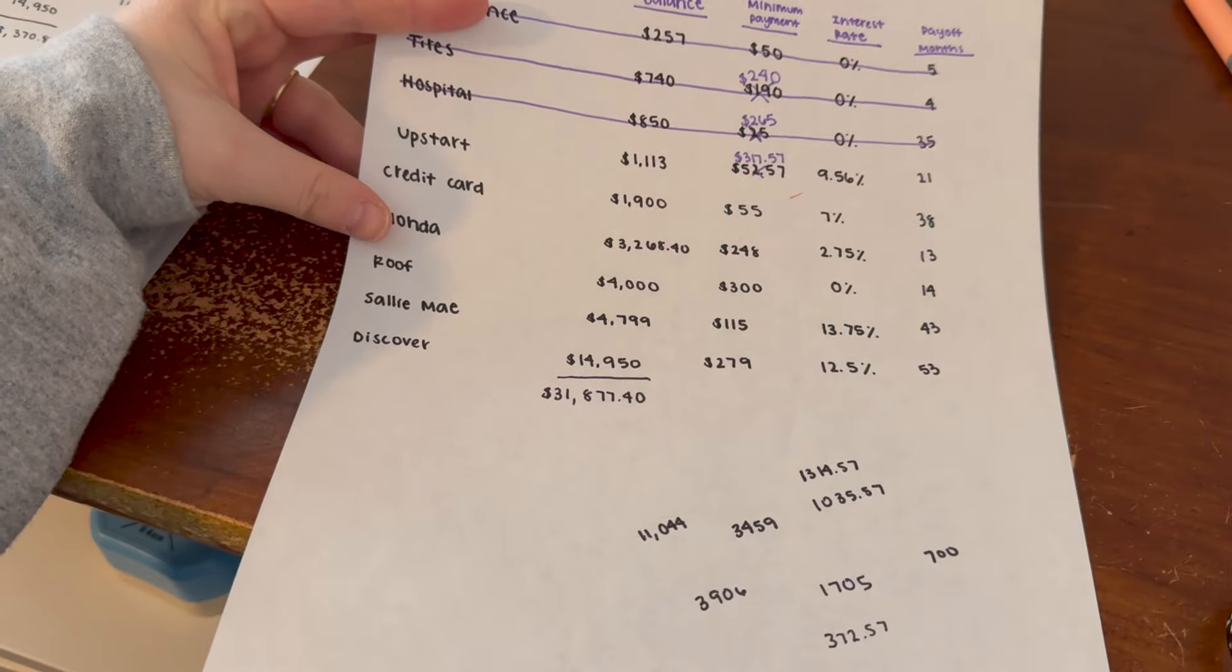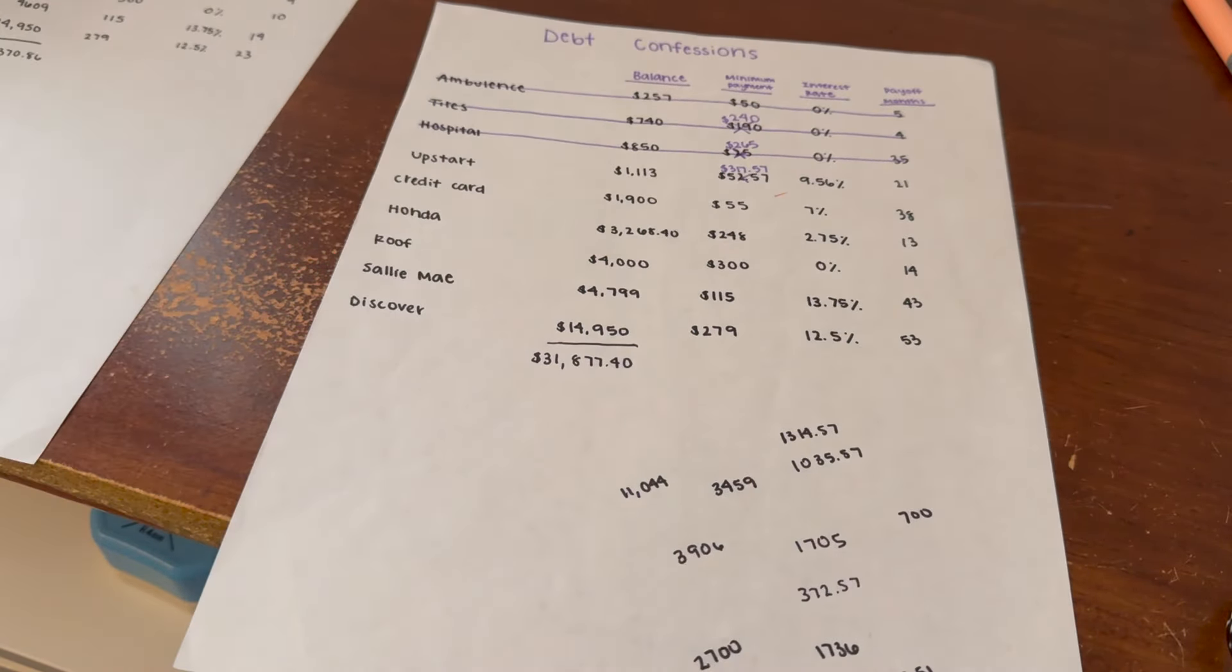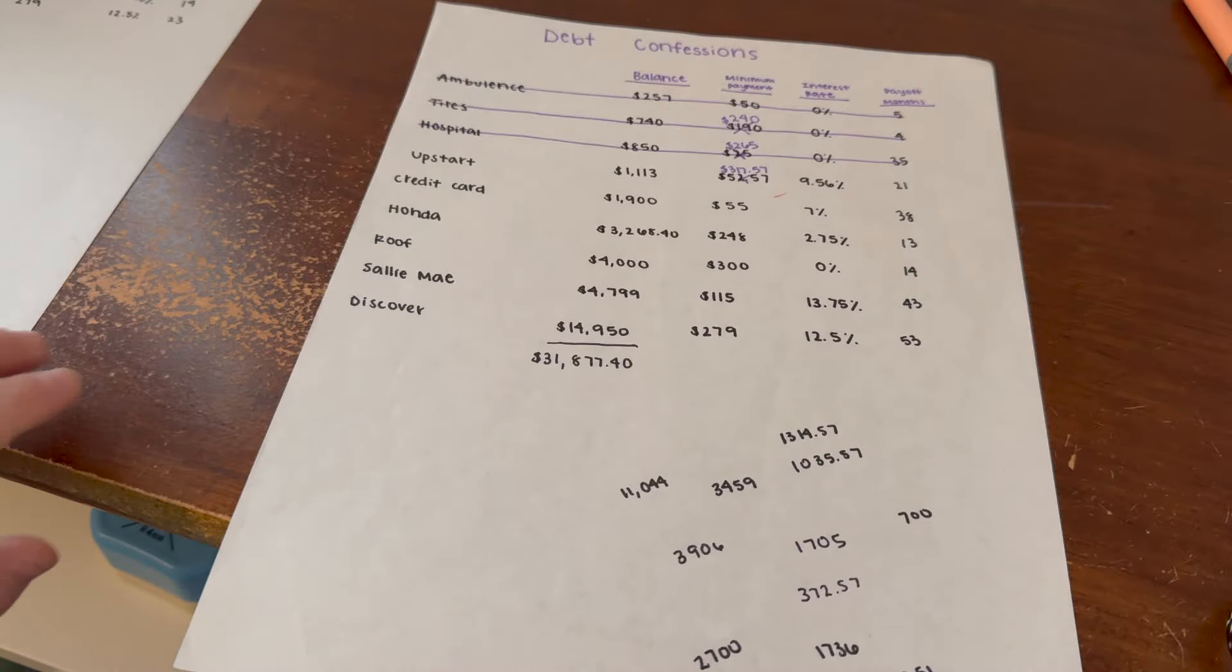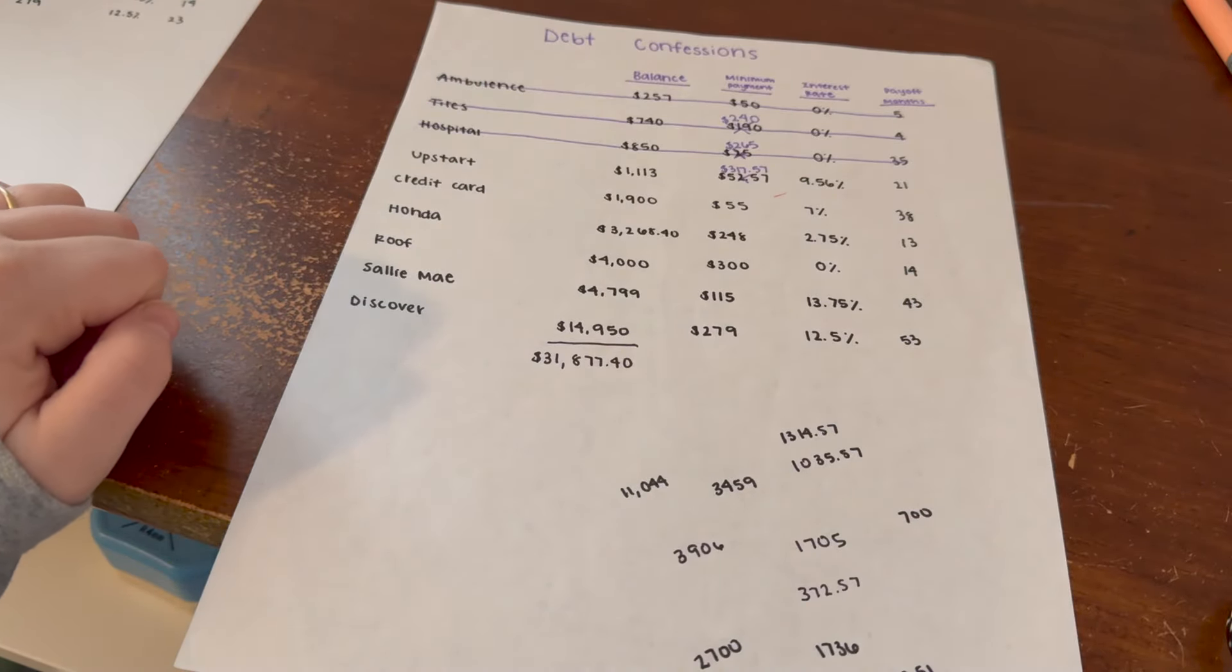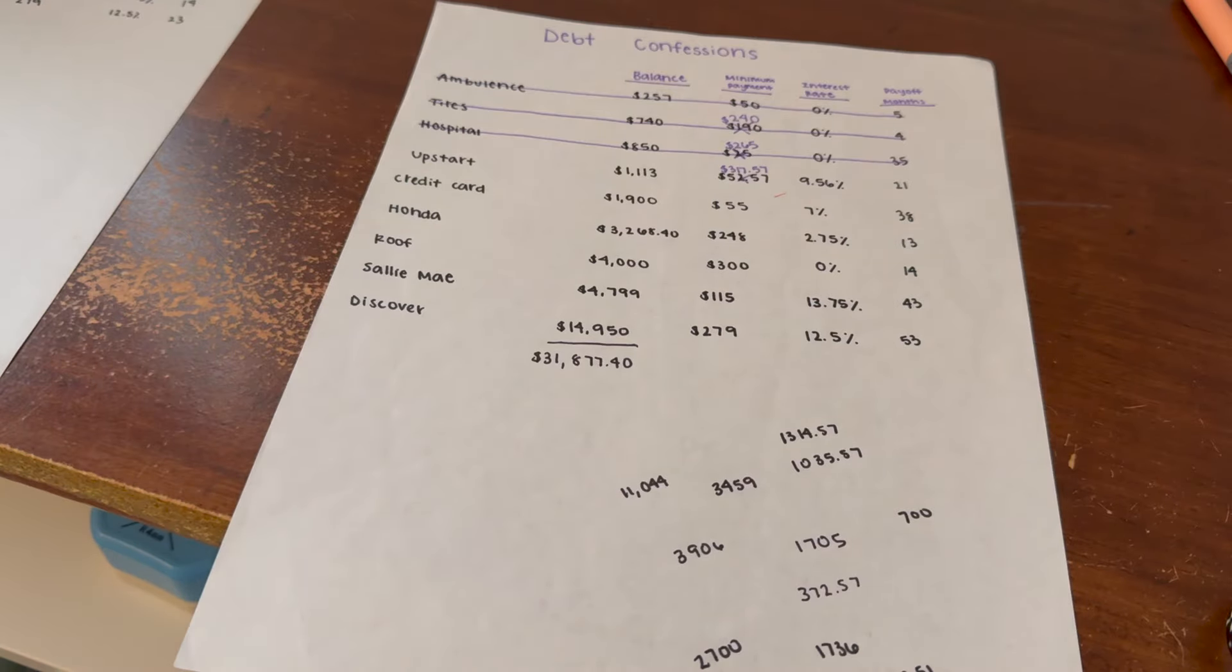I know some people might be confused why I skipped my credit card and went straight to my Honda. That is just for personal reasons, it's probably not the best financial decision, but paying off my car was really important to me and something I really wanted to accomplish last year. I was putting my focus into paying off that, which is totally fine. There's no perfect way to go about this, this is just the way I wanted to do it.